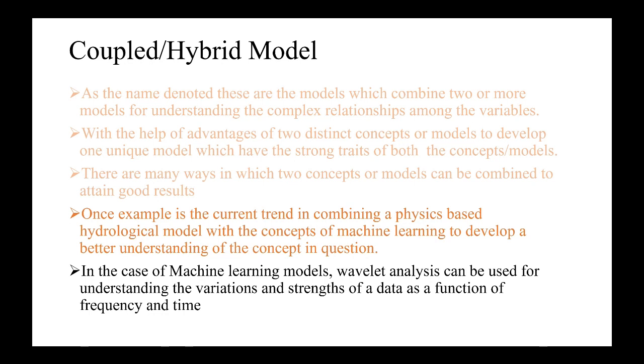Also, in terms of machine learning models, to have better performance understanding the variations of data at various frequencies and times using a wave of sinusoidal form or other forms in terms of wavelets or Fourier transforms is one of the methods which can be used for improving the accuracy of machine learning models. These are the two examples which we can discuss in future videos to see how a singular model when combined with a concept of another model can produce a unique hybrid model with higher accuracy.